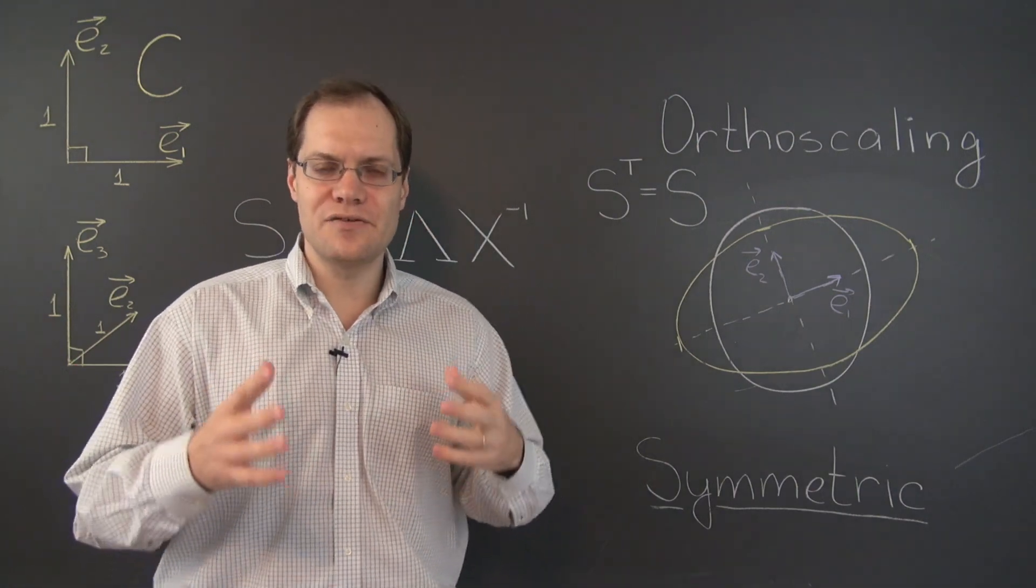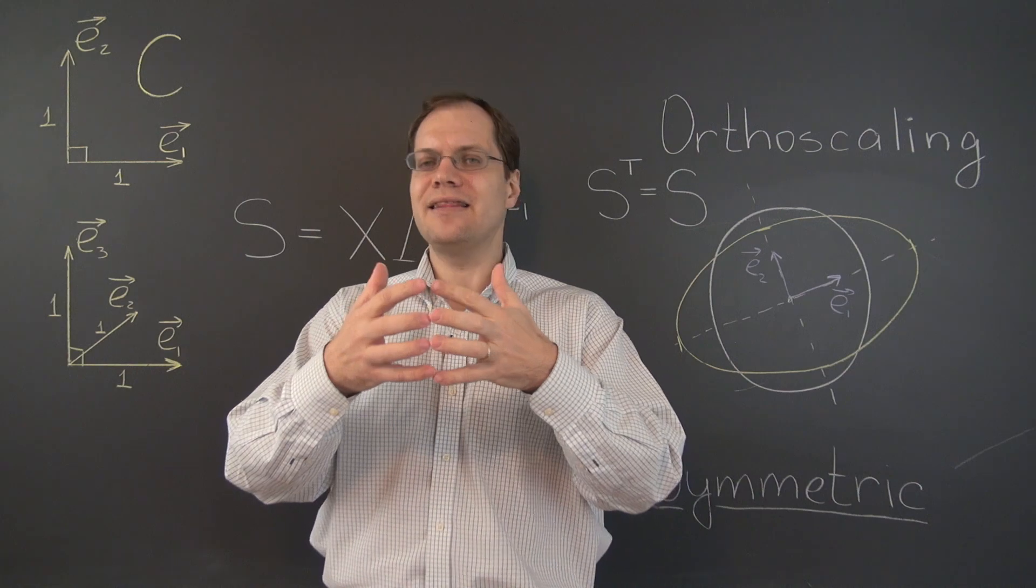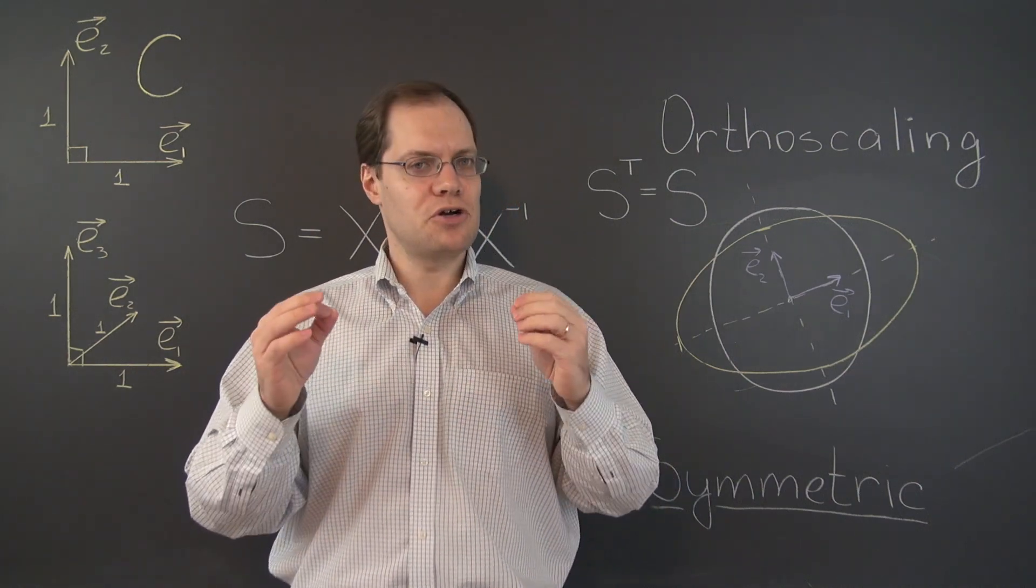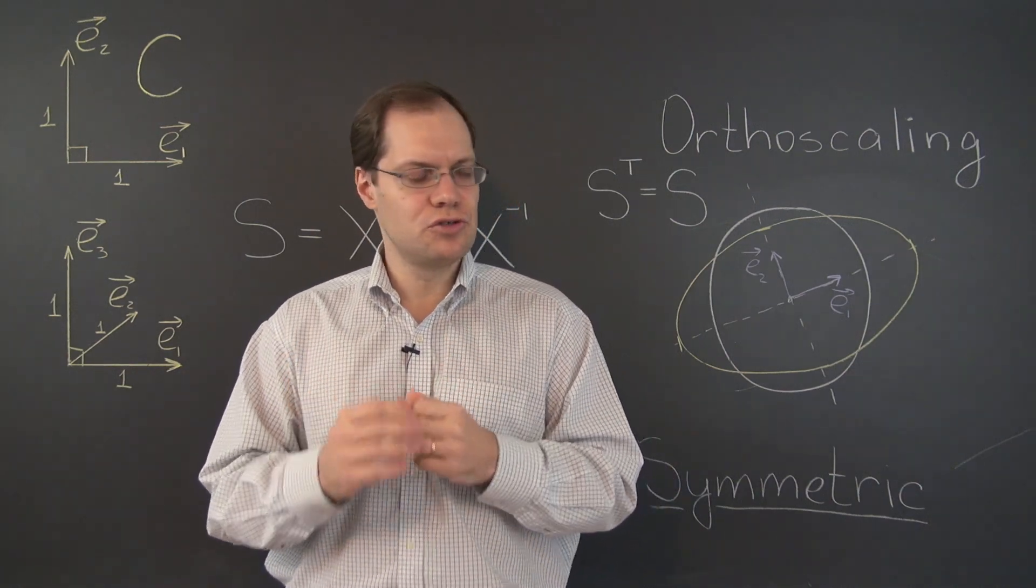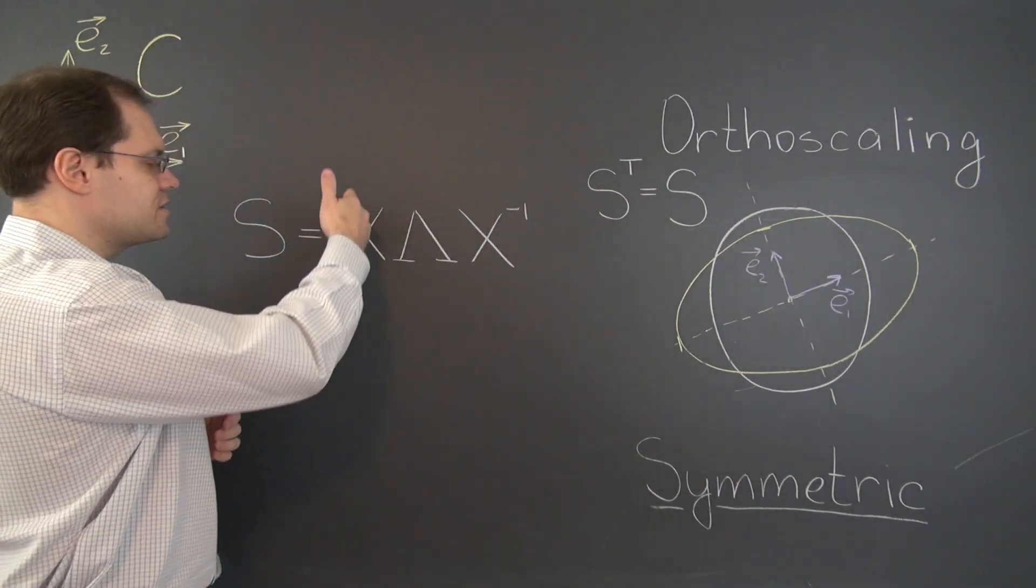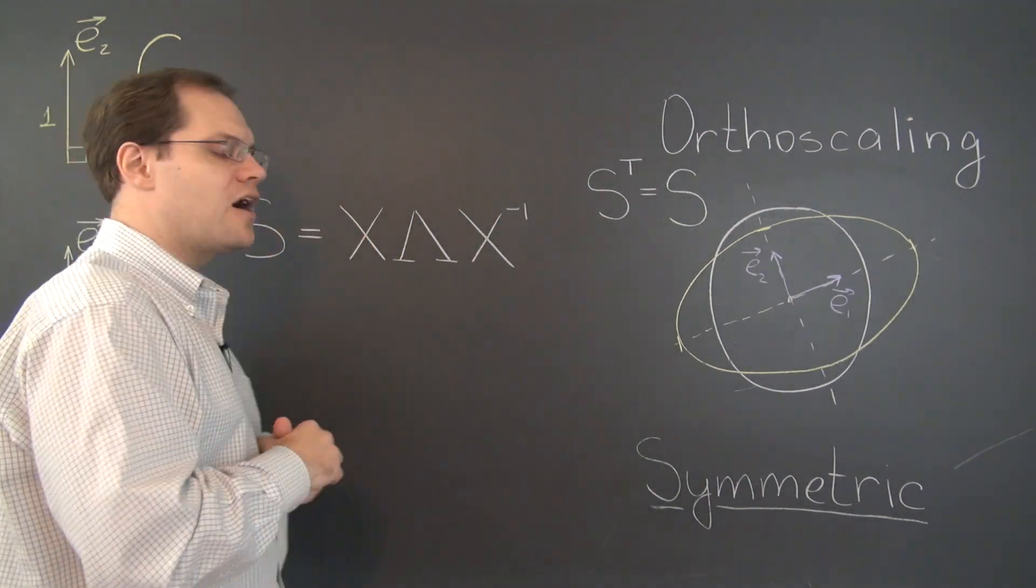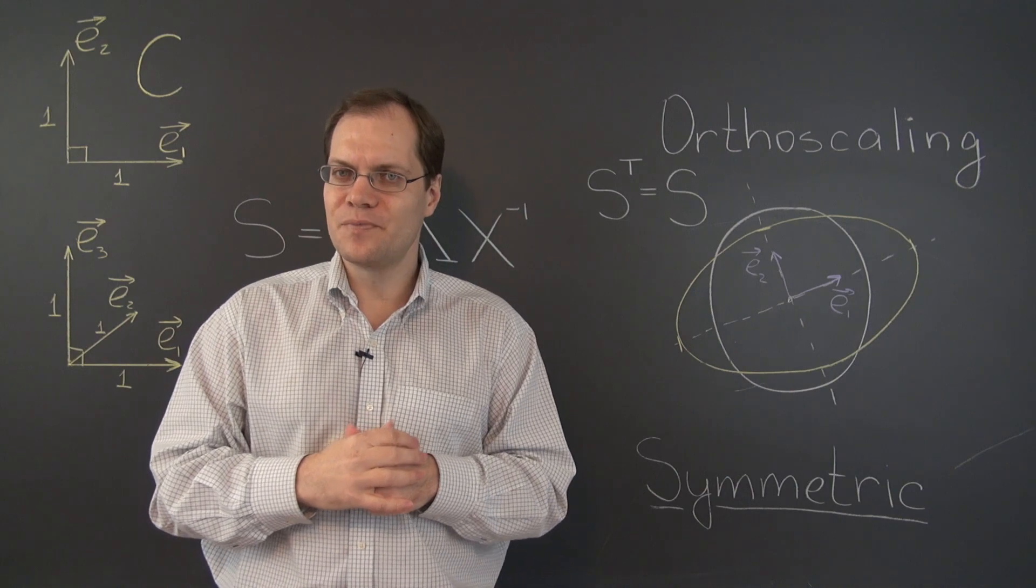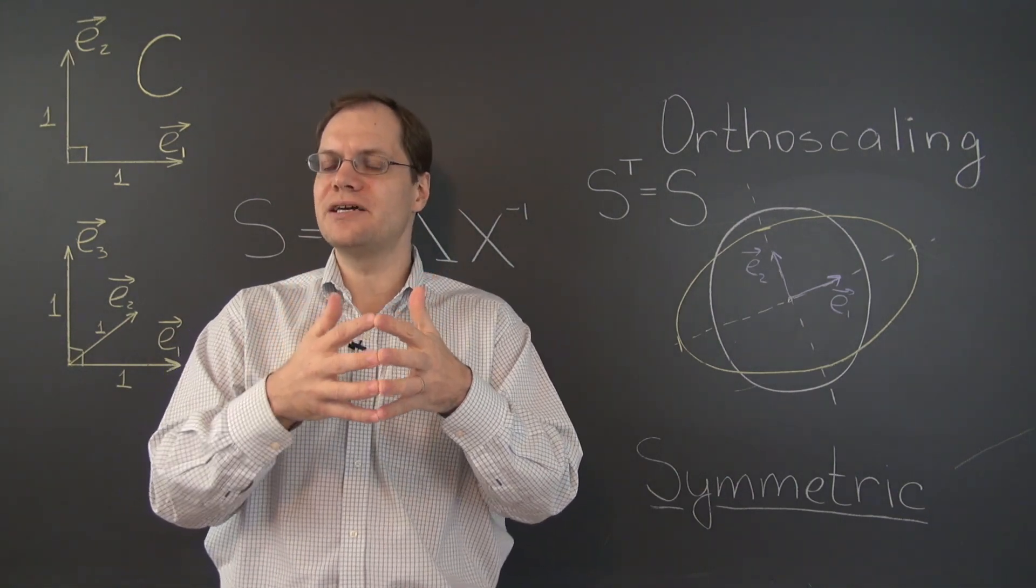If either one of these statements isn't true, then that relationship may not work out. But because both of these statements are true, we know that the columns of the matrix X are actually orthogonal in the sense of the algebraic dot product.